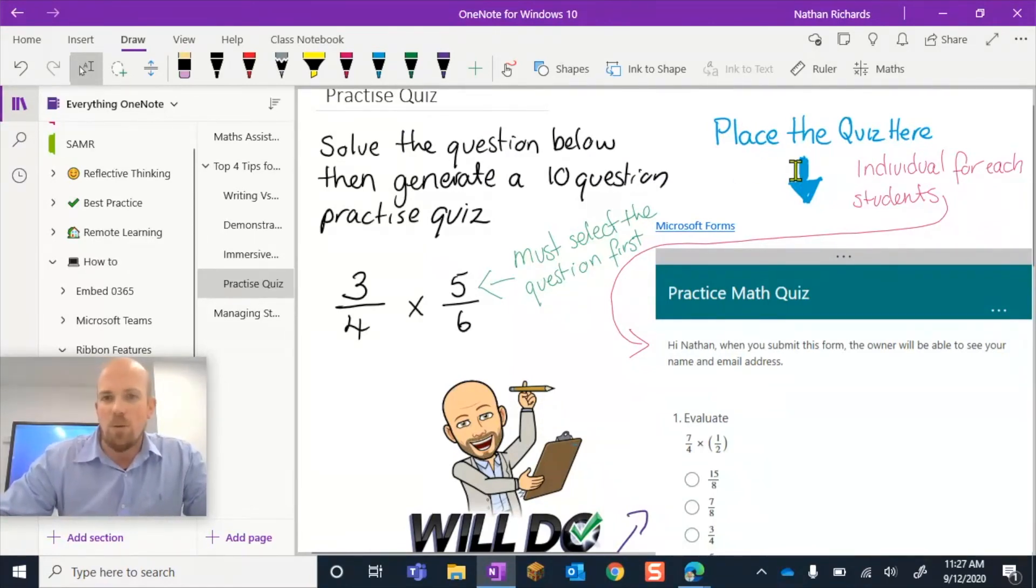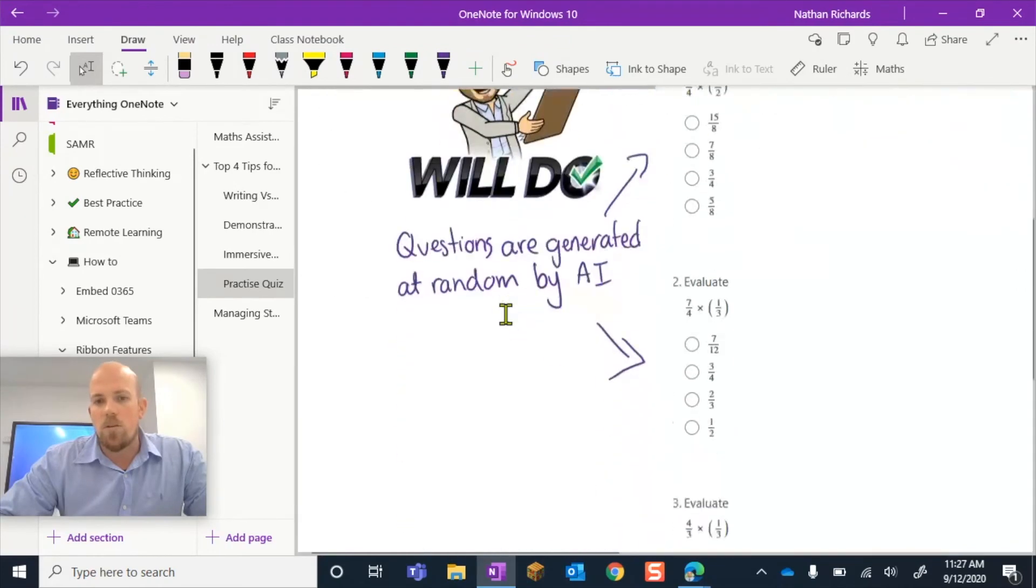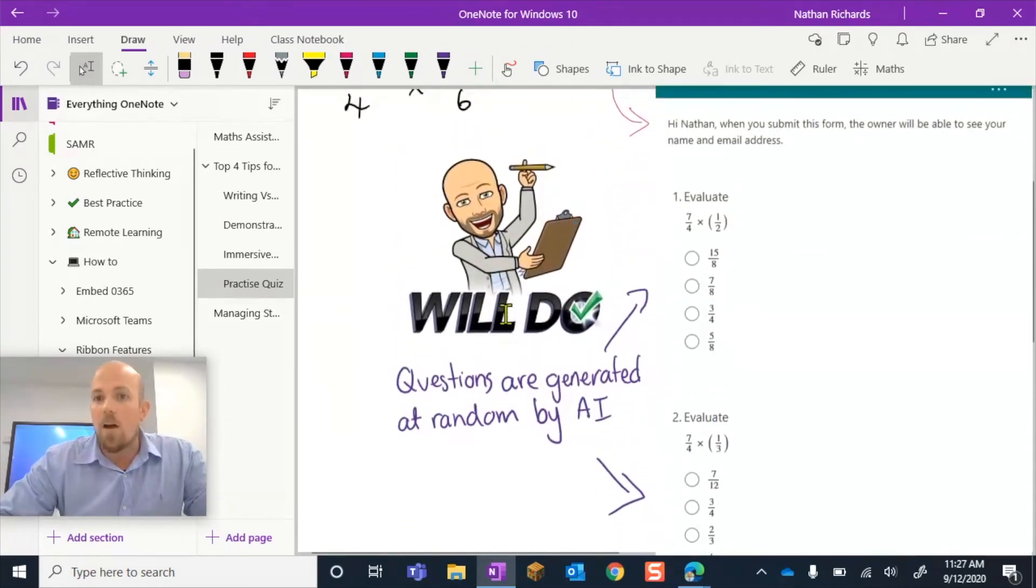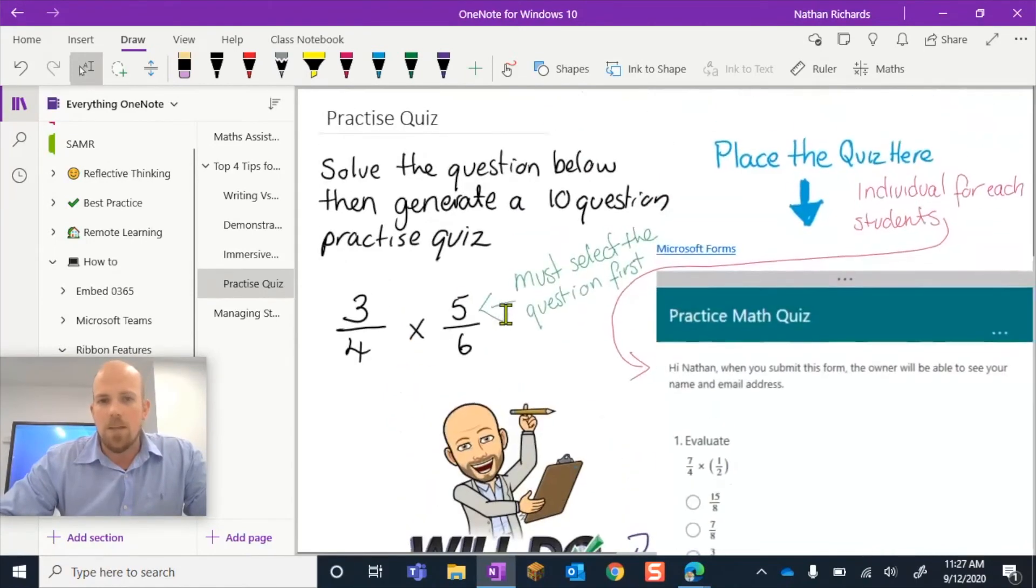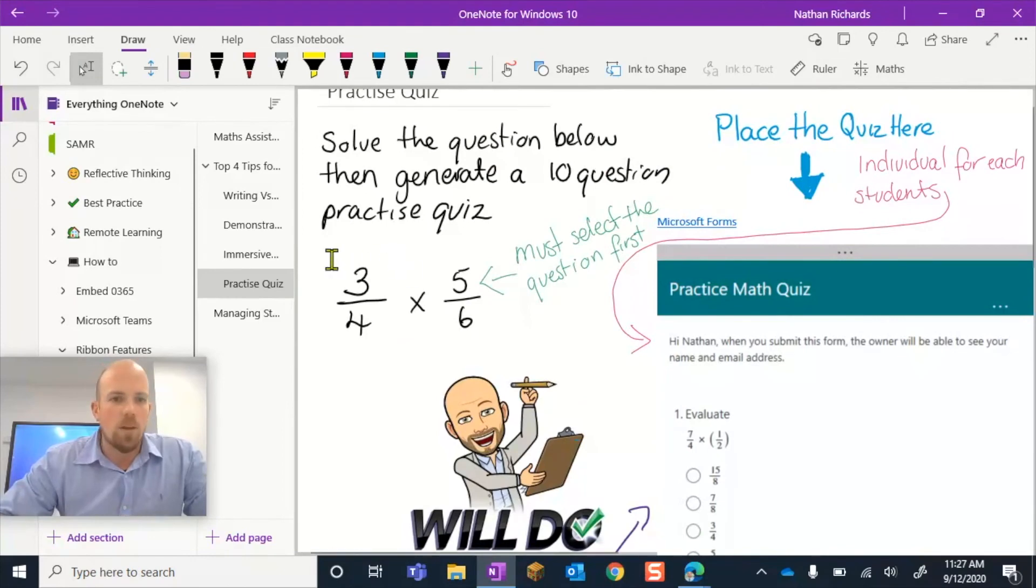And what we do is also very useful is tell them where you want them to place it, because the whole point of, you know, using the class notebook is that you're going to review it so much easier if they're always in the same place for you. So try to indicate or put cues or a box there or something where you want them to place their quiz. And what it's going to use is it's going to use some AI to generate like questions to the one that they selected.